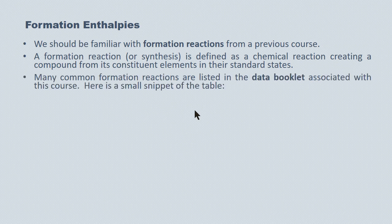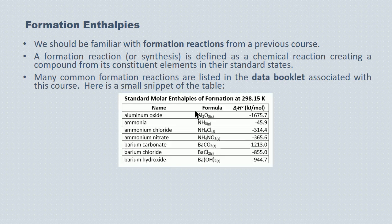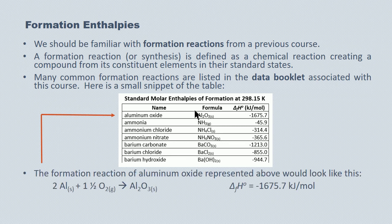The data book supplied in this course lists many common formation reactions together with their enthalpy. For example, aluminum oxide's formation from its elements in their standard state releases 1675.7 kilojoules for every mole of aluminum oxide produced, and here's what the thermochemical equation looks like.